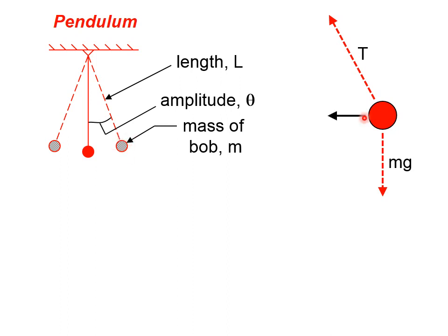The restoring force is this component of the tension. This restoring force acts to pull this bob back towards the equilibrium position. Simple geometry suggests that the restoring force is equal to the tension in the string times the sine of theta.